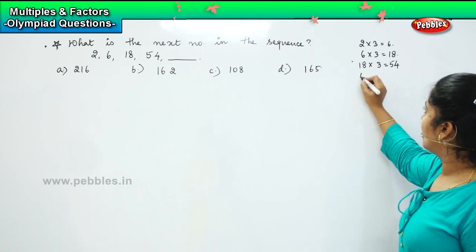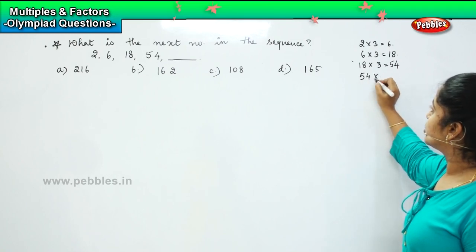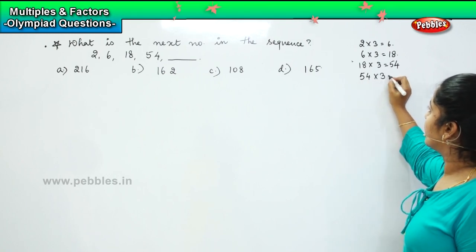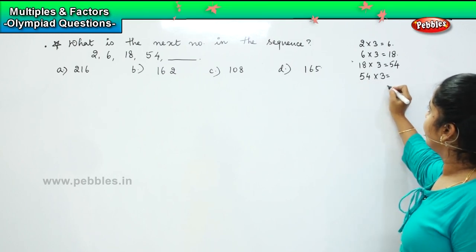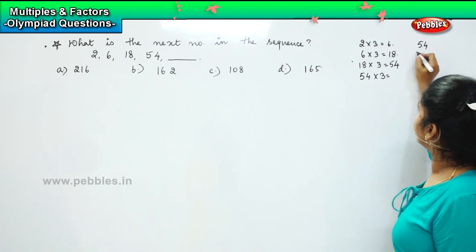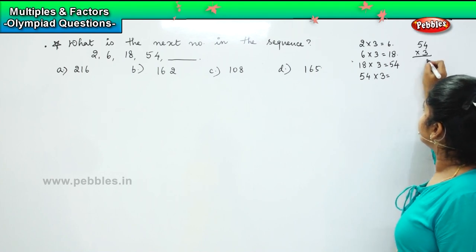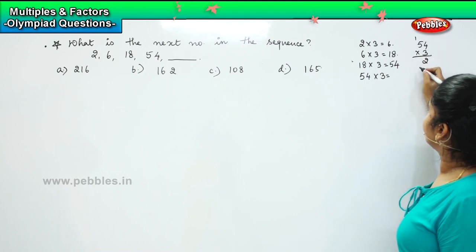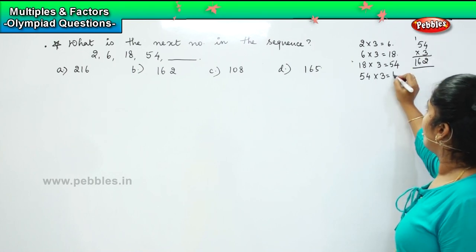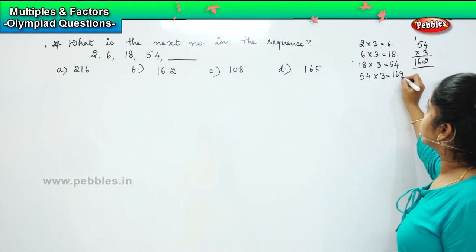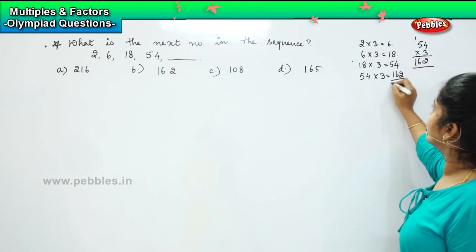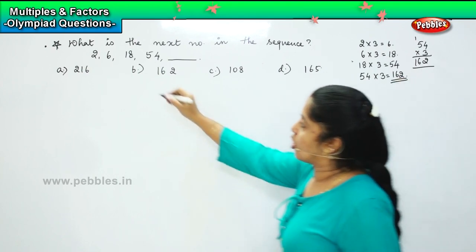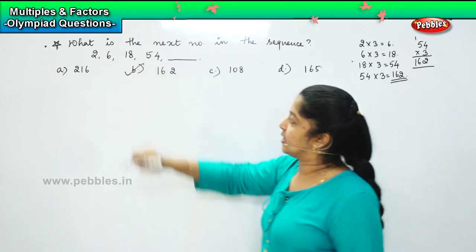So what will I do now? 54 into 3. Let us multiply and see what is 54 into 3. 4 threes are 12, carry 1. 5 threes are 15, plus 1 is 16. So that is 162, which is Option B.